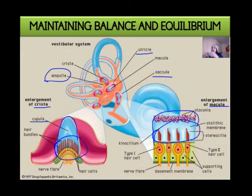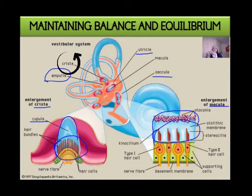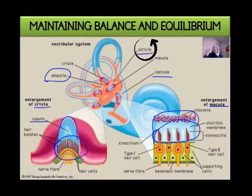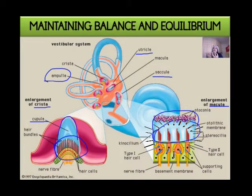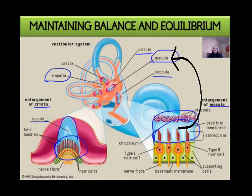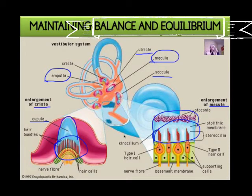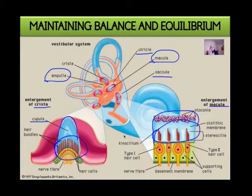Let's move on to how balance and equilibrium is maintained. To recap: the ampulla contains hair cells called cristi, surrounded by a jelly-like substance called the cupula. The utriculus and sacculus contain their own hair cells called the macula, also surrounded by a gel-like substance — both playing an important role in balance.